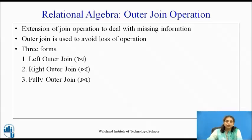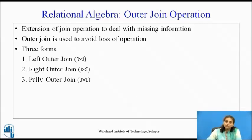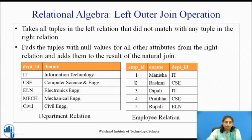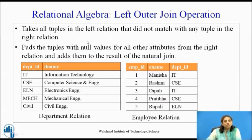Sometimes we want complete information without any loss. In that case we can use outer join. Outer join is an extension of natural join used to avoid the loss of information. There are three forms: left outer join, right outer join, and full outer join.